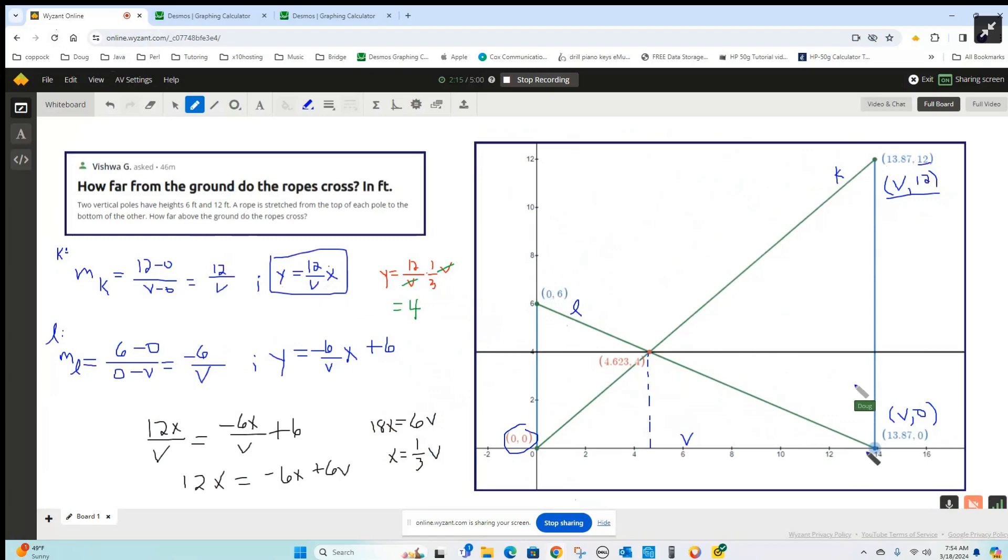So the equation of this line is Y equals negative 6 over V, that's the slope, times X plus the y-coordinate of the y-intercept, which is 6. So there's the equation of line L.